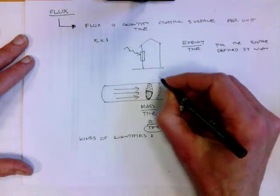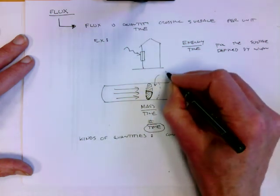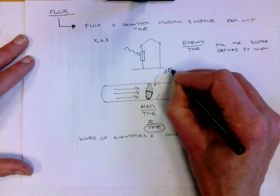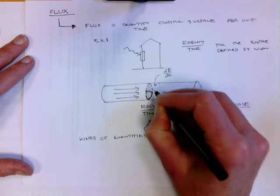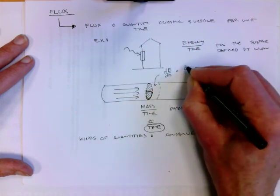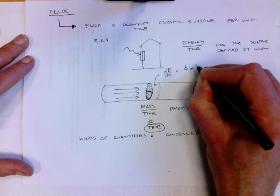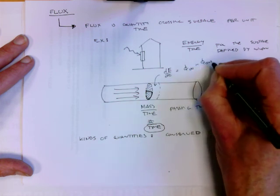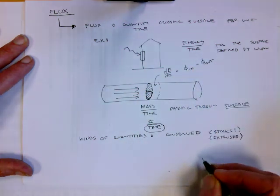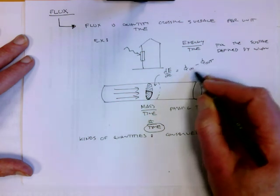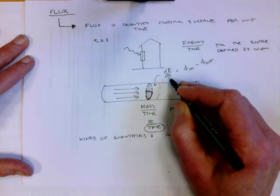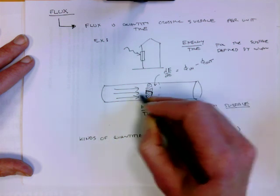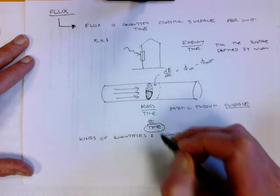Since energy is a conserved quantity, it must be the case that the time rate of change of energy inside this slice must be equal to the amount of flux that comes in minus the amount of flux that goes out. That's why this idea of flux is useful—it allows us to frame equations for quantities that vary in space like this.